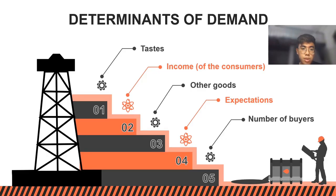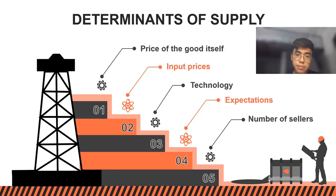Now we will talk about the determinants of demand. The first is basis. The second is income of the consumers. The third is related goods, then expectations, and number of buyers. Determinants of supply also have five determinants: the first is the price of the goods itself, input price, technology, expectations, and number of sellers.